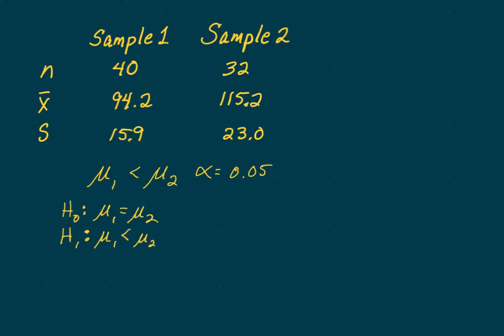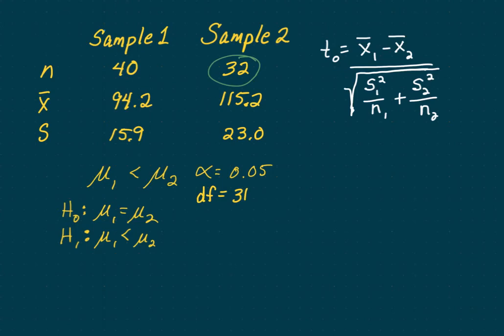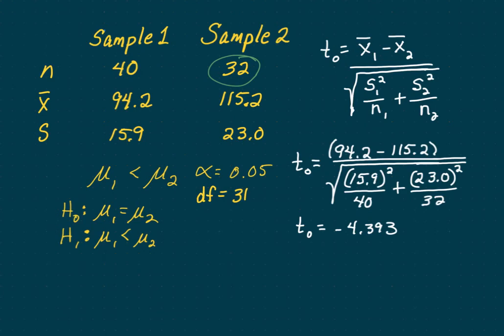Before we move on, we need to find degrees of freedom. Find the sample with the smallest number of individuals — that's 32 — and subtract one, giving degrees of freedom equal to 31. Now let's find our test value. Pause the video and see if you can properly input the different variables. The result is a very low test value — I'm guessing we have significance here, but let's continue with the method.